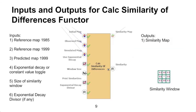You can select the Edit Functor Ports option to access the different input maps and parameters. The three input maps are listed at the top. The use exponential decay, window size, and exponential divisor all refer to the similarity window, which we will discuss in detail shortly.